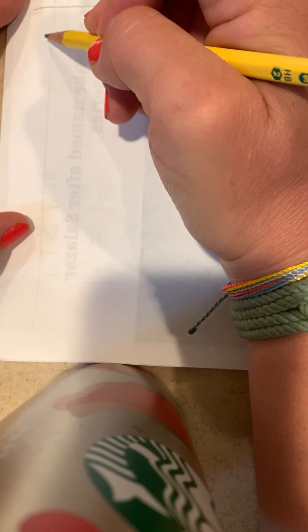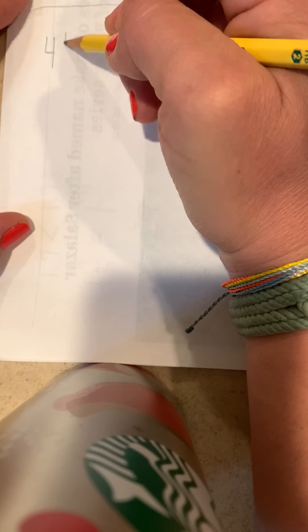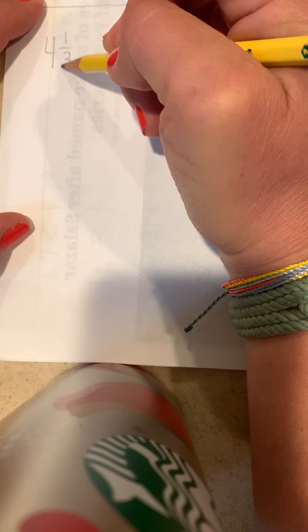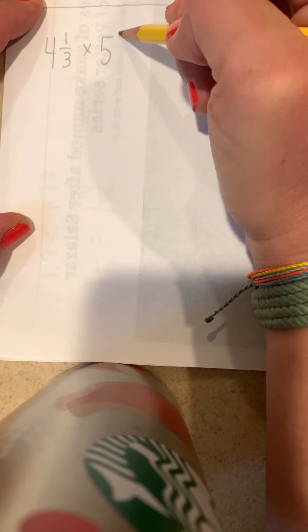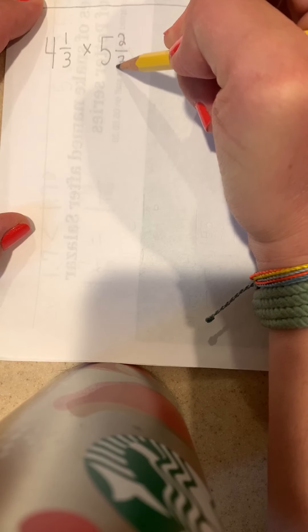The first problem that we had you solve in your exit ticket was 4 and 1/3 times 5 and 2/3. The first thing that you're going to want to do to multiply these two mixed numbers is you're going to want to make them into improper fractions.